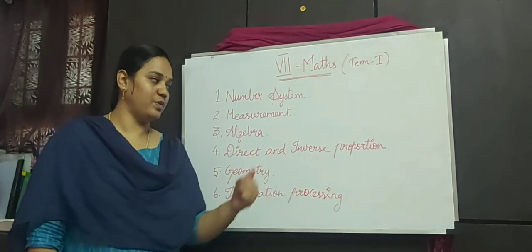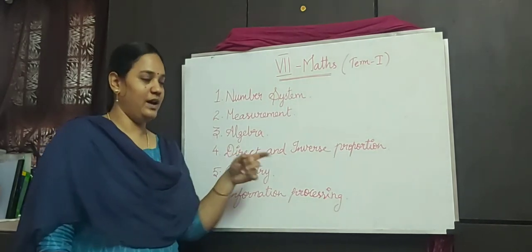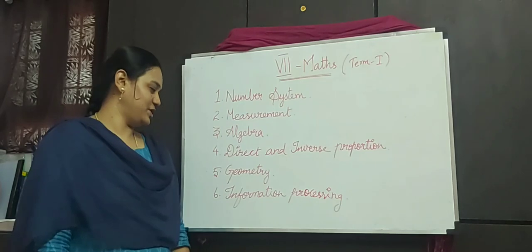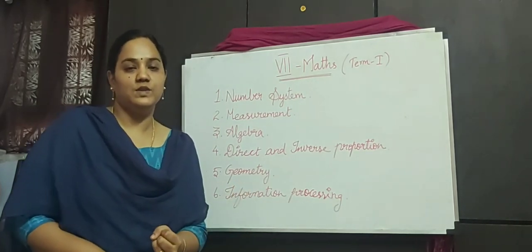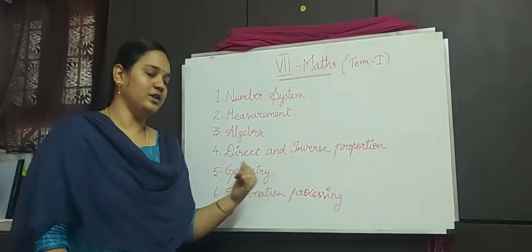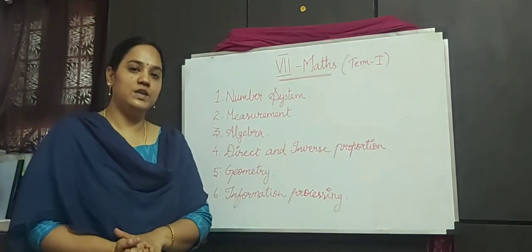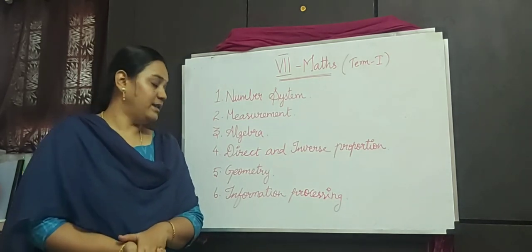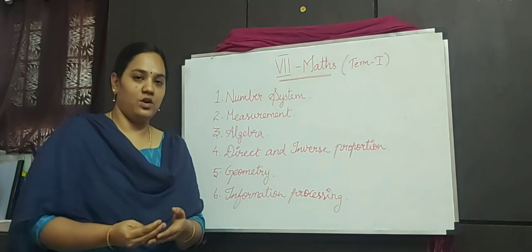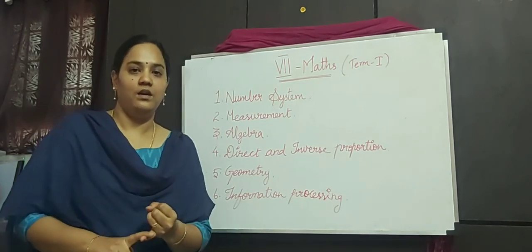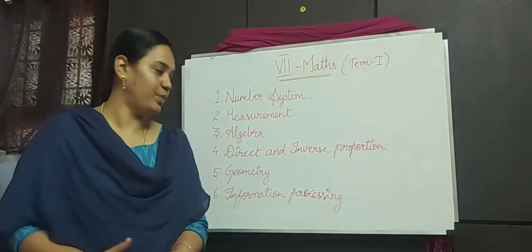In direct and inverse proportion, as the name says, we are going to learn about direct proportion as well as inverse proportion. Next comes geometry, which includes theoretical geometry as well as practical geometry. In theoretical geometry we will learn about pairs of angles formed using intersecting lines and transversals. In practical geometry we will draw angle bisectors, perpendicular bisectors, and some special angles without using a protractor.